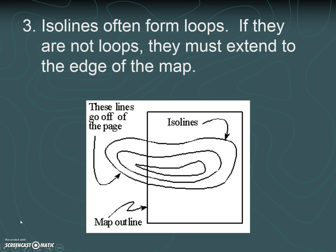The third rule is that iso lines almost always form loops. However, sometimes the whole loop doesn't fit on our paper. This rectangle represents a map — you'll notice that some iso lines form closed loops, but the map ends at the edge. So the rule is they have to be loops or they have to reach the edge of the map. When drawing these, your iso lines either have to make a loop or go all the way to the edge of the map.